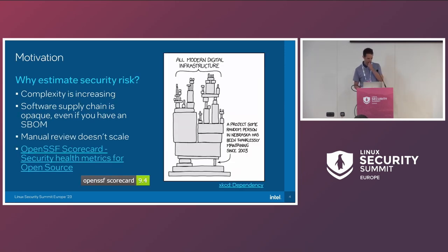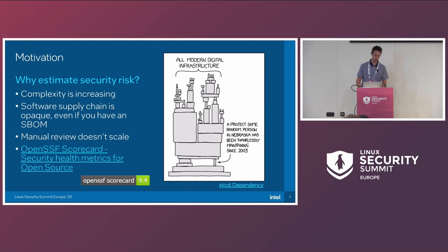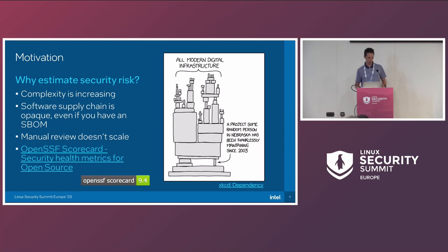Why do we want to estimate security risk? All of the projects we're looking at, especially at cloud scale, have a ton of open source components. Estimating which one of those components is going to be the next log4j is super hard. Even if you have a list of all the components of your project, figuring out which one is going to have an issue is really hard. And doing that manually doesn't scale. We do secure architecture code review, and it's really hard to look through even the first layer of dependencies, let alone dependencies of dependencies.